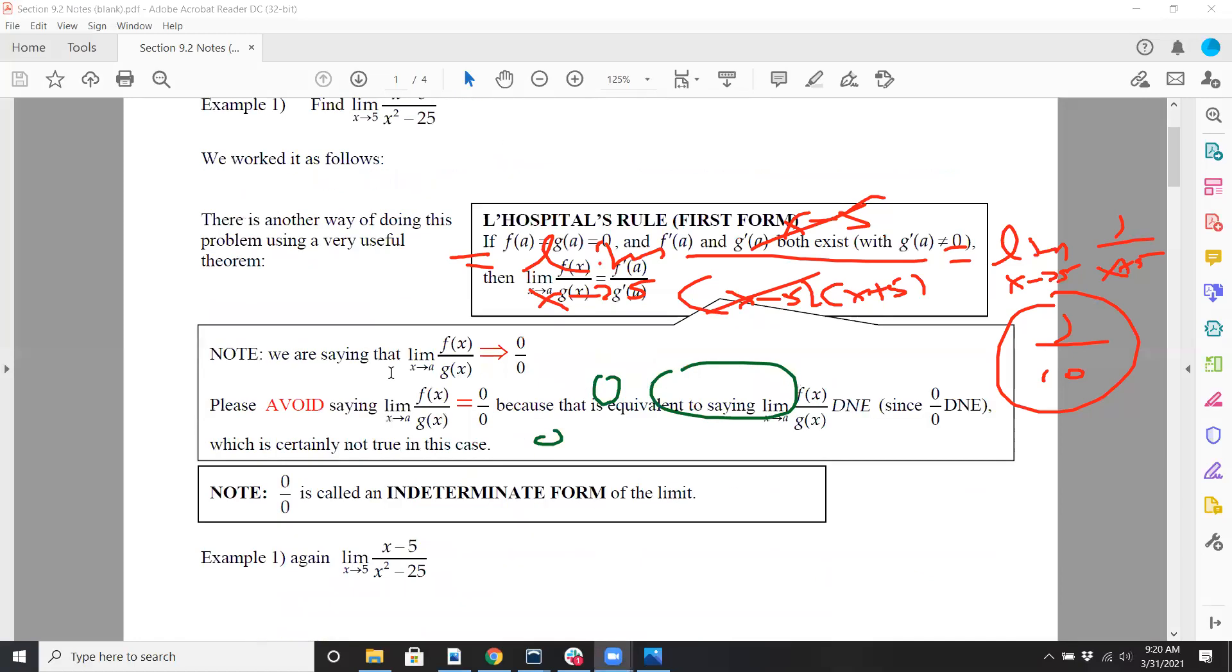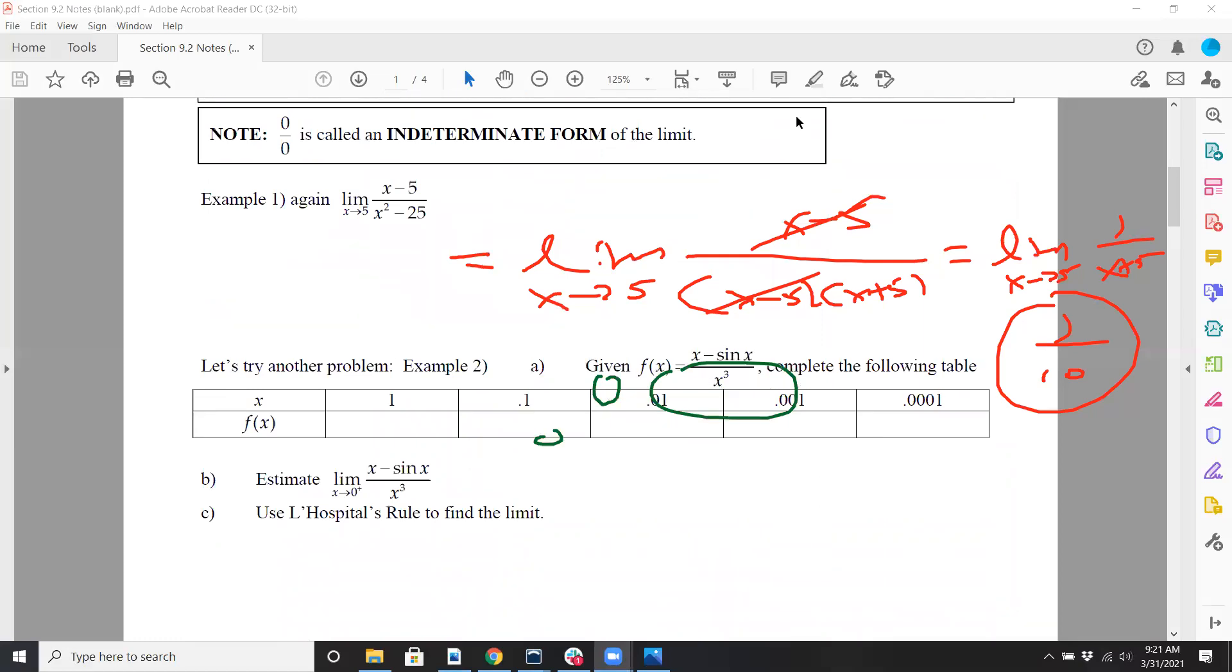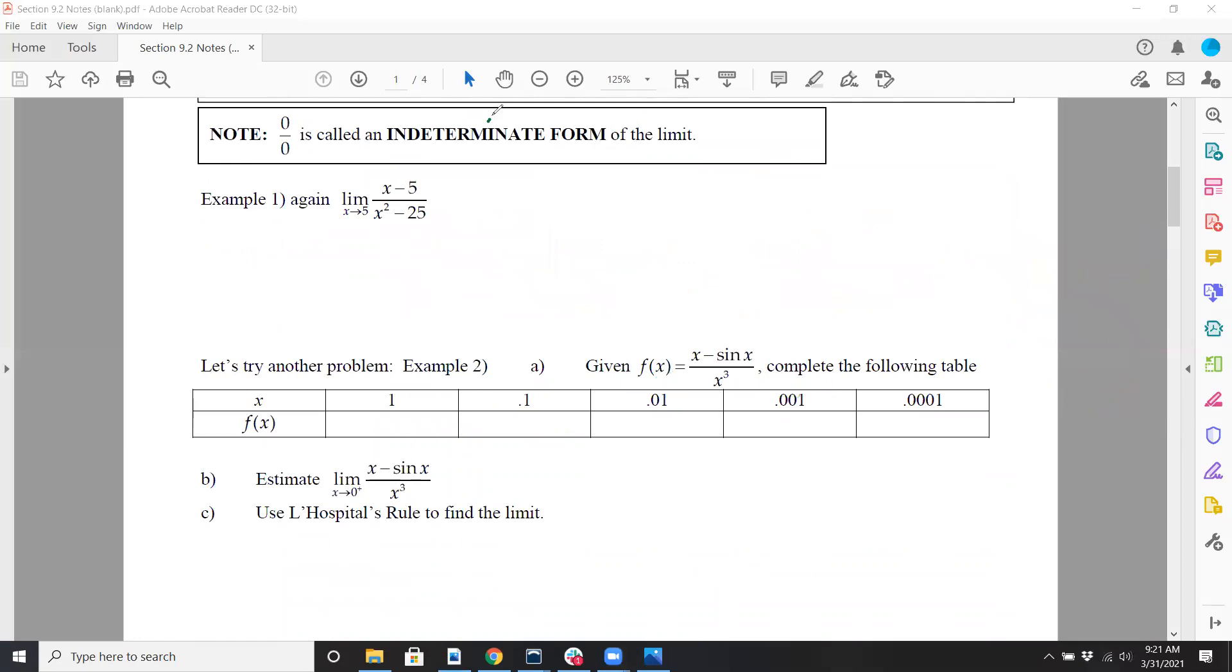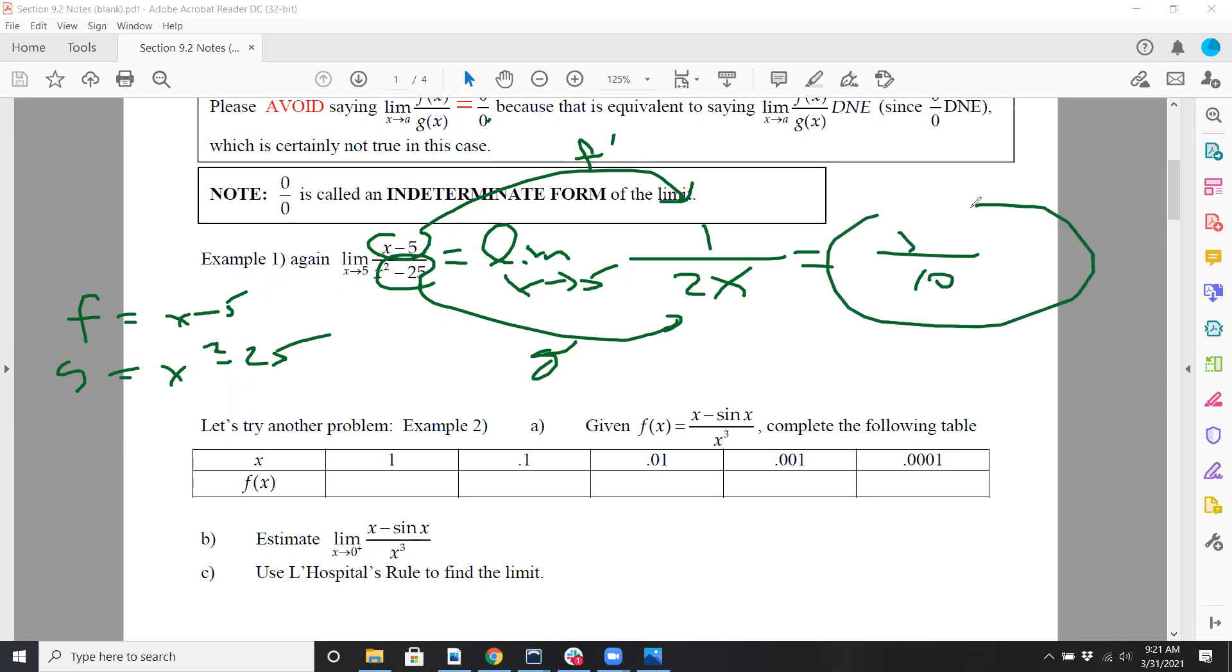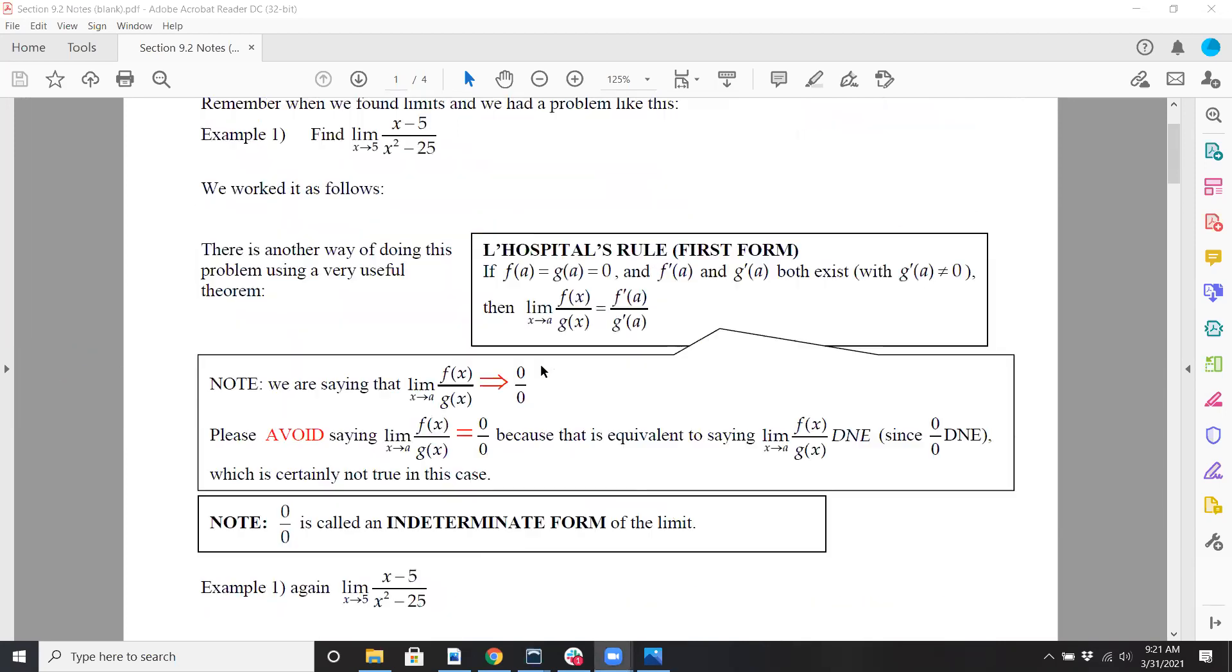So what's happening here, we are saying that the limit as x approaches a of f(x) over g(x) is 0/0. And you don't want to say that the limit does not exist. That's not really necessarily true because the limit can exist. 0/0 is indeterminate form. Just take the derivative of the top and bottom. You're taking the limit as x approaches 5 of your derivative of the numerator and derivative of the denominator. This is f prime, this is g prime, where we let f equal x squared minus 25 and g equal x minus 5. Now plug in 5, and it's like magic. You get 1/10. Same thing that we did when we factored and simplified.